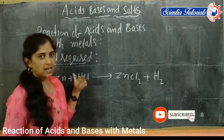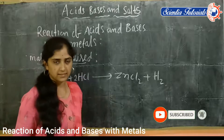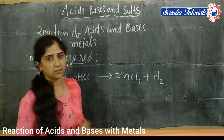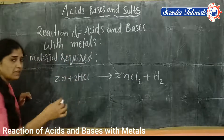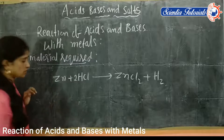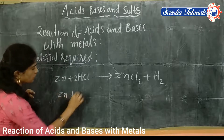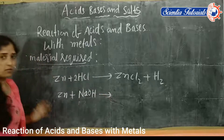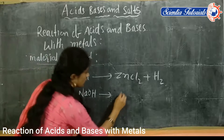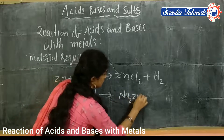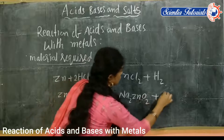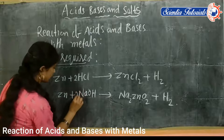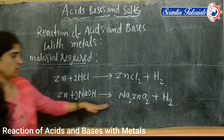If acids or bases react with metals, the same hydrogen gas is released and the related salt will be obtained. If we take zinc granules and sodium hydroxide, then sodium zincate — which is the salt — and hydrogen gas will be liberated. We write 2 here to balance it. This is the balanced equation.